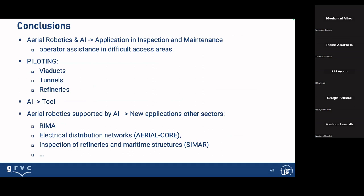As a final conclusion: AI, robotics, and artificial intelligence for inspection and maintenance applications is very promising, especially in areas with difficult operator access. PILOTING used three use cases: viaducts, tunnels, and refineries, all were very successful, using around ten different kinds of neural networks and tested scenarios. AI is a tool that is here to stay. The AI robotics work is supported by artificial intelligence in new application sectors. RIMA is a project for inspection and maintenance in difficult-access areas — a network that has just finished, but now has an extension. Another project uses AI robotics for electrical distribution networks using artificial intelligence. This is supported by the IMR project.